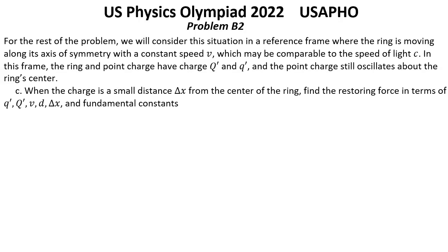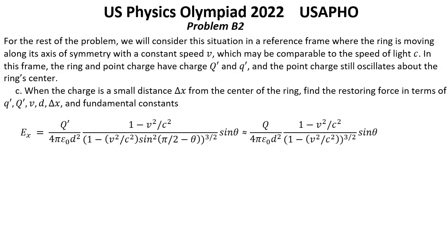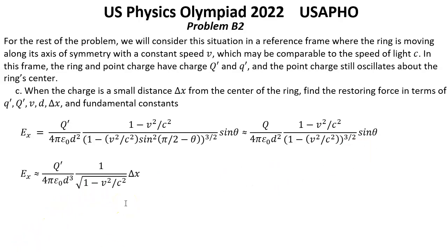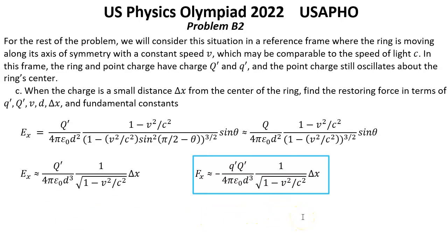Solution for Question C: When the charge is a small distance delta x from the center of the ring, find the restoring force in terms of small q', big Q', V, D, delta x, and the fundamental constants. The position of the charge relative to each charge in the ring is almost 90 degrees. Using the provided electric field expression, the electric field from the ring in the x-direction equals the given expression, where π/2 − θ is very close to 90 degrees. We can therefore neglect that term and set sin θ = 1. This simplifies to the restoring force expression shown. That is the solution for Question C.